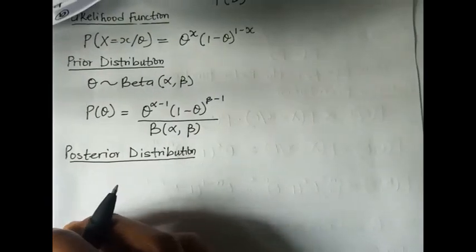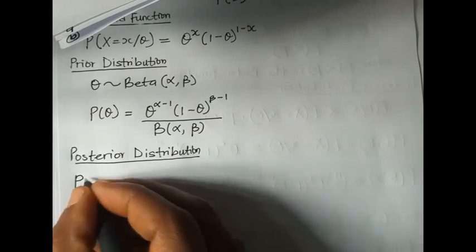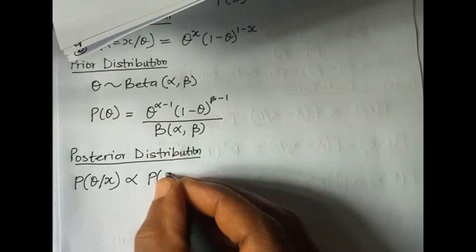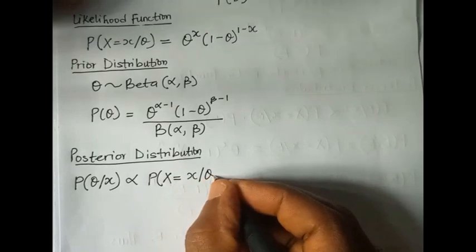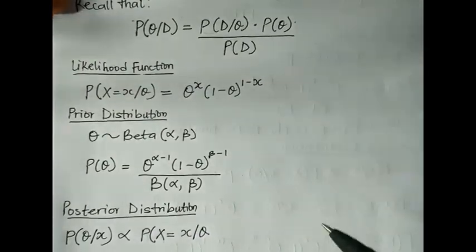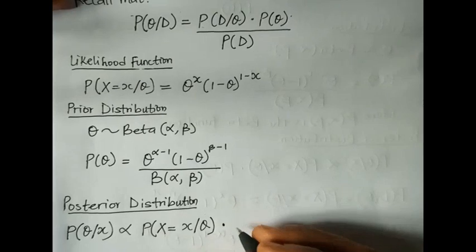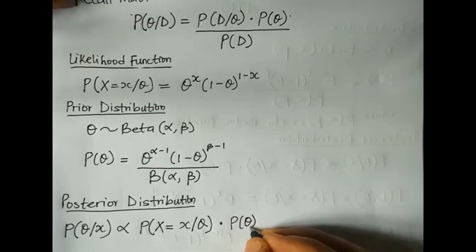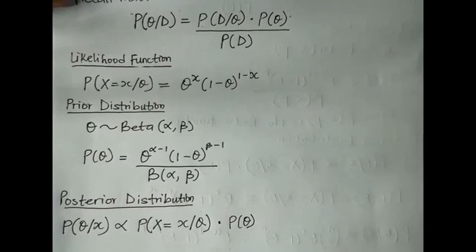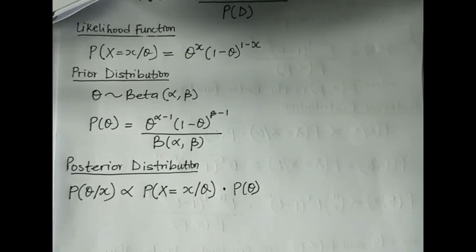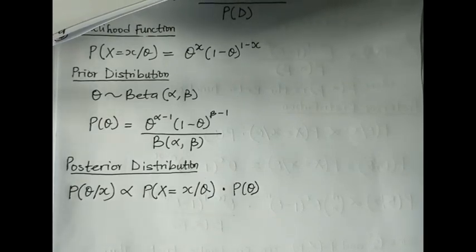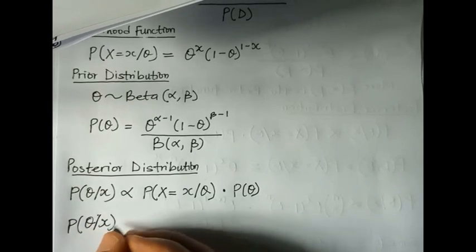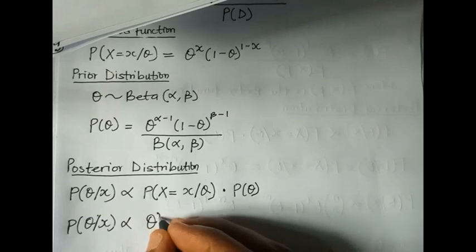The posterior distribution, which is the probability of theta given X, is proportional to the likelihood function multiplied by the prior distribution. The next step is to substitute the likelihood and the prior distribution.